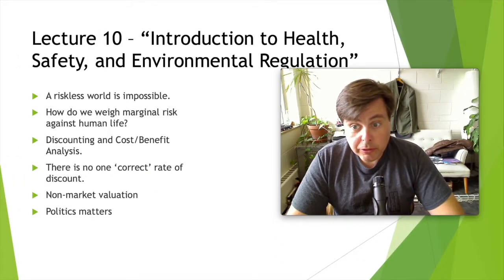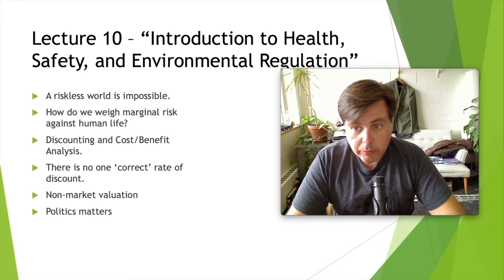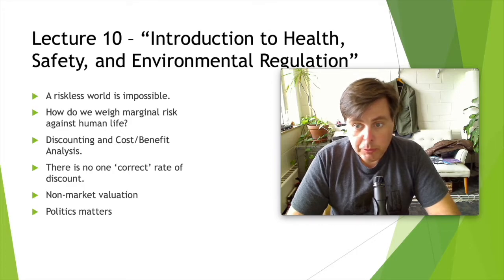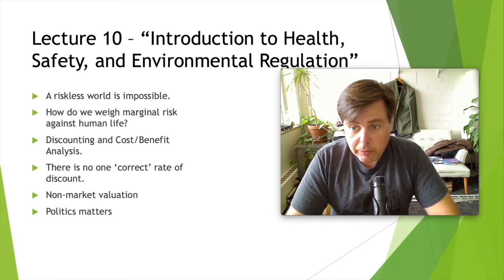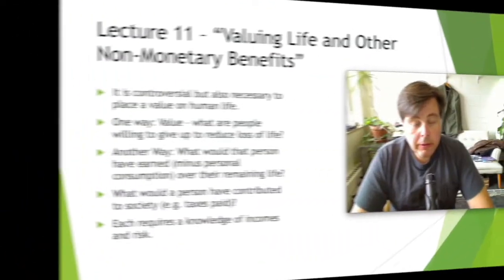In lecture ten, we moved to a new level of complication. We introduced the idea that a riskless world is impossible — we can't completely eliminate risk. We talked about how we value things that don't have market values, which is quite tricky. It involves questions like: what is the marginal cost of a lost human life, or how much is clean air worth? Now, you may say you can't put a value on that, but in fact not only do we put values on them all the time — you do too. It's something we have to do as a practical matter, even if it may seem morally repugnant.